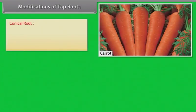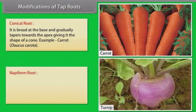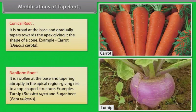Conical root — it is broad at the base and gradually tapers towards the apex, giving it the shape of a cone. Example: carrot. Napiform root — it is swollen at the base and tapering abruptly in the apical region, giving rise to a top-shaped structure. Examples: turnip, Brassica rapa, and sugar beet, Beta vulgaris.